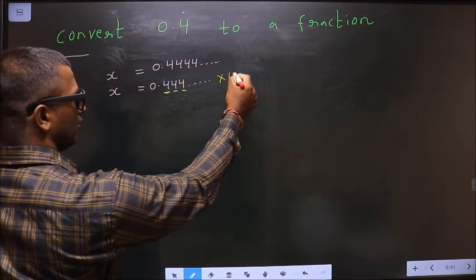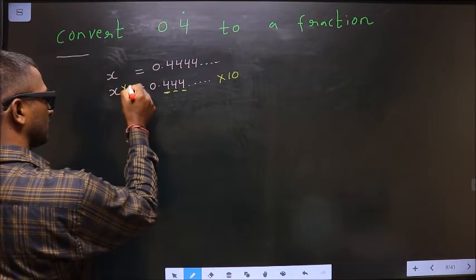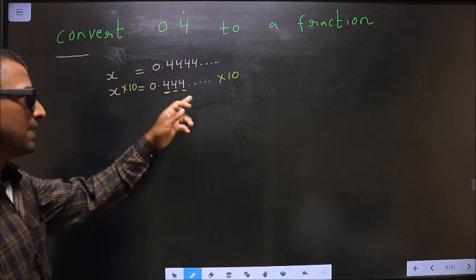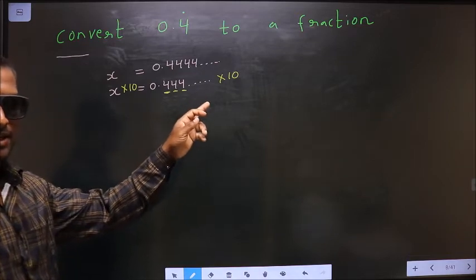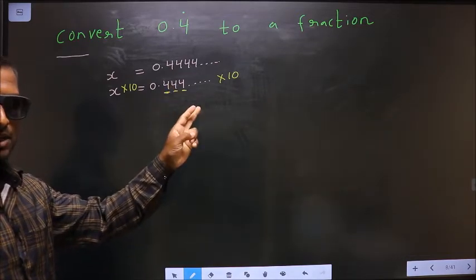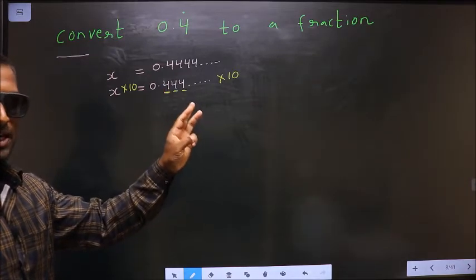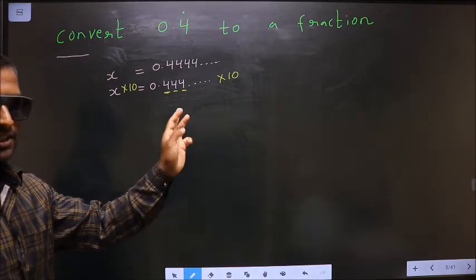Whenever only one number is being repeated, you should multiply by 10 on both sides. Had it been two numbers being repeated, multiply by 100. Had it been three numbers, you should multiply by 1000. This is the rule we follow.